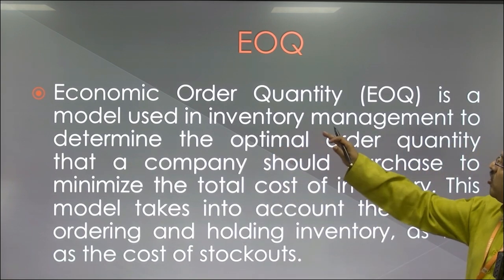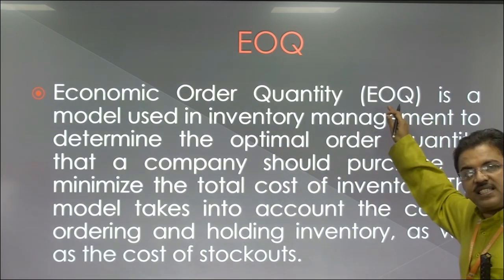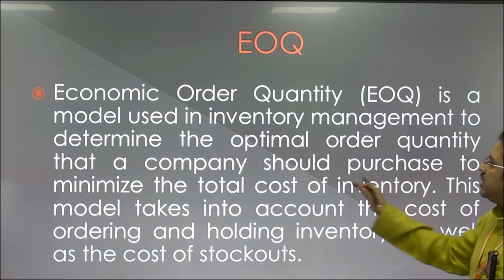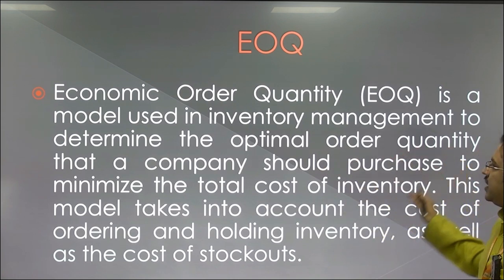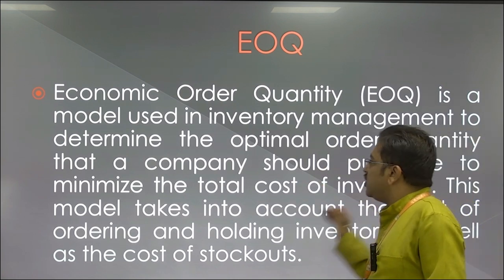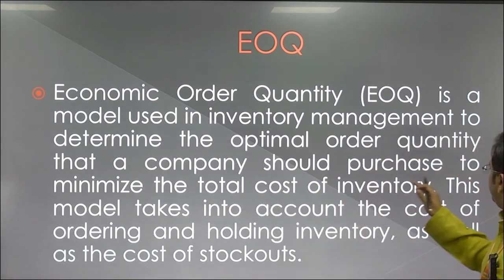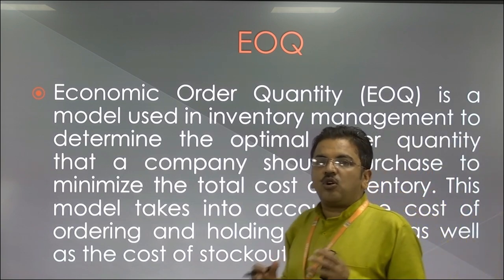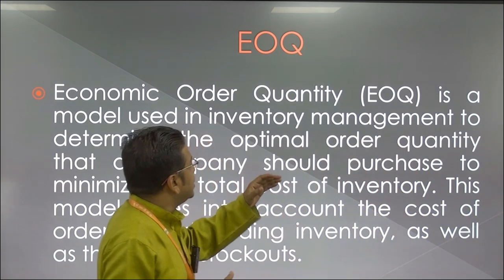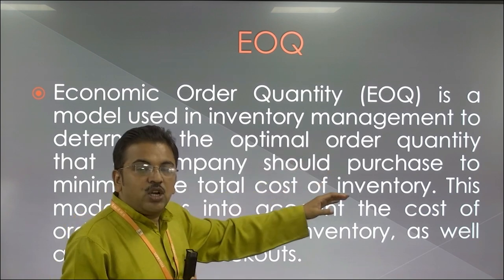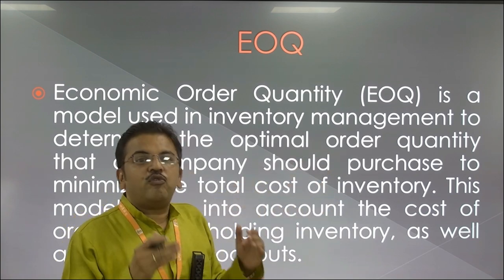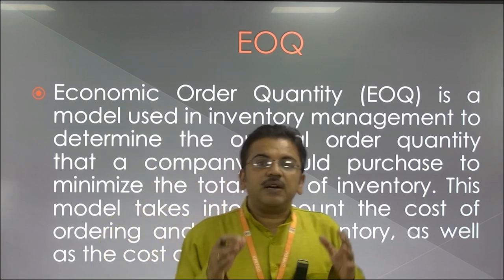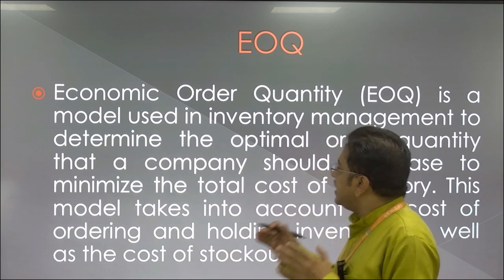Economic Order Quantity, also known as EOQ, is a model used in inventory management to determine the optimal order quantity that a company should purchase to minimize the total cost of inventory. Here we are going to determine the optimal cost — the cost at which the company should buy or place an order for stocks — so that it can get the best price.